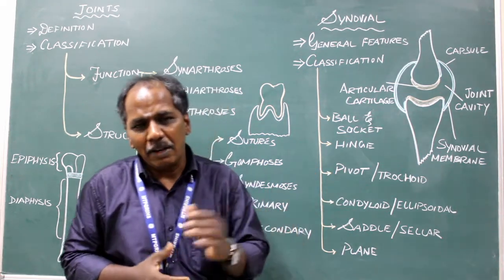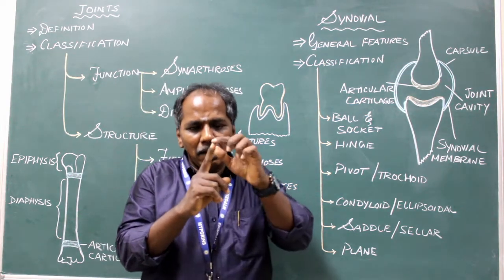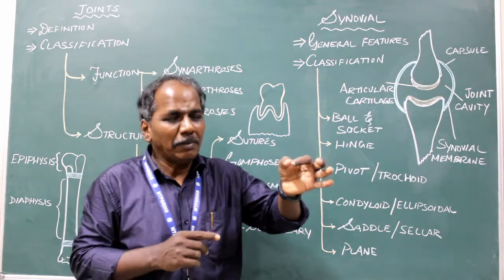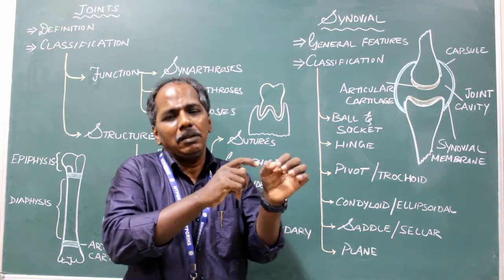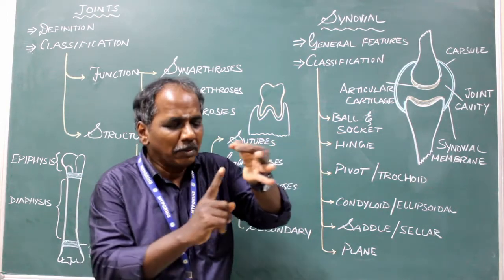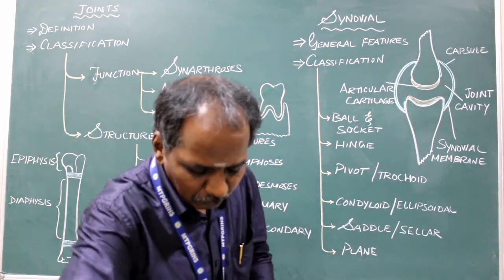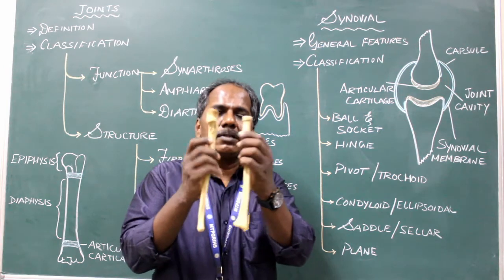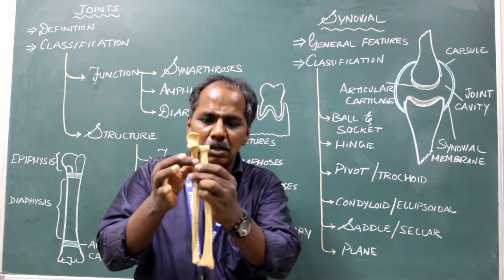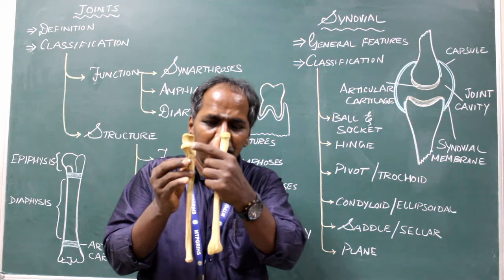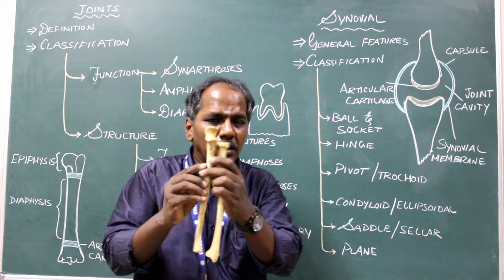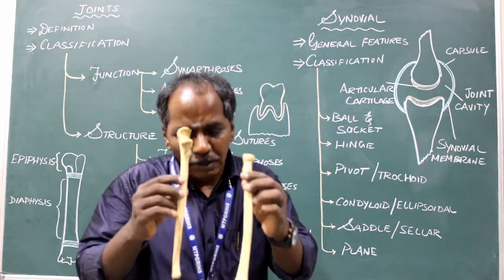Pivot variety, also called trochoid variety. In this type of joint, one articular surface of a bone articulates within a ring formed partly by a bone and partly by a ligament. It is circular in nature, so the bone articulates within the ring. The movement is rotation in a vertical axis. Example: superior radioulnar joint, where the head of the radius fits within the ring formed by the ulna and the annular ligament.